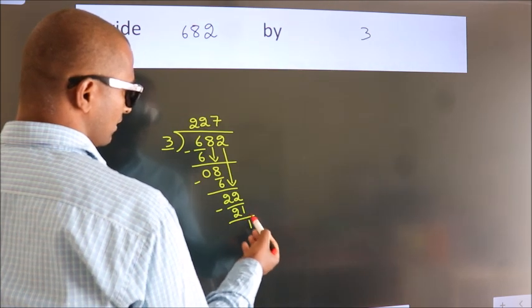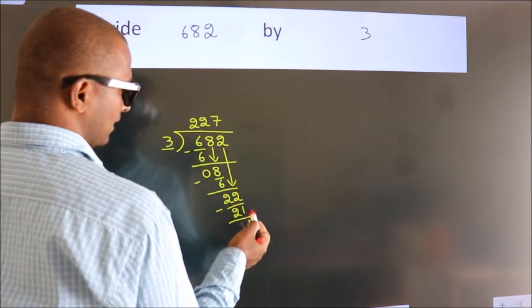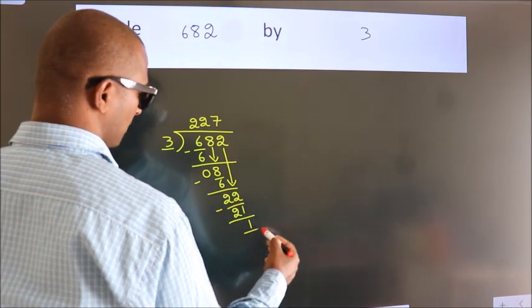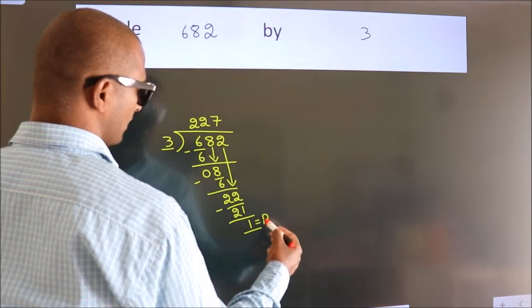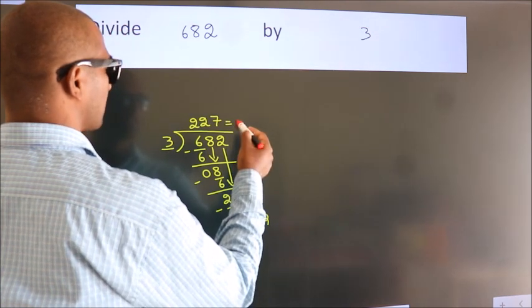After this, no more numbers to bring down. So we stop here. This is our remainder. This is our quotient.